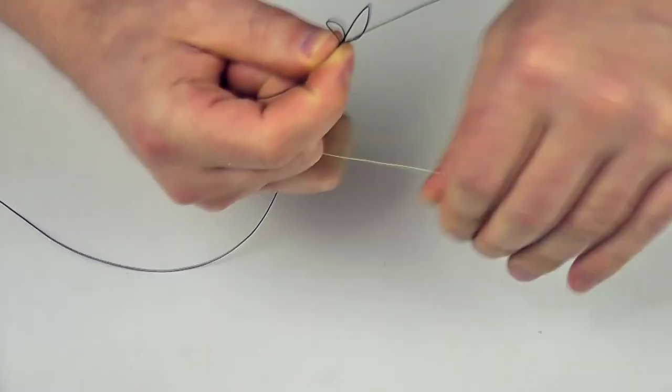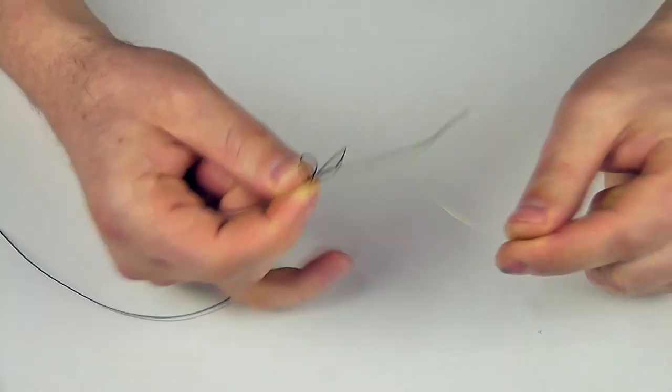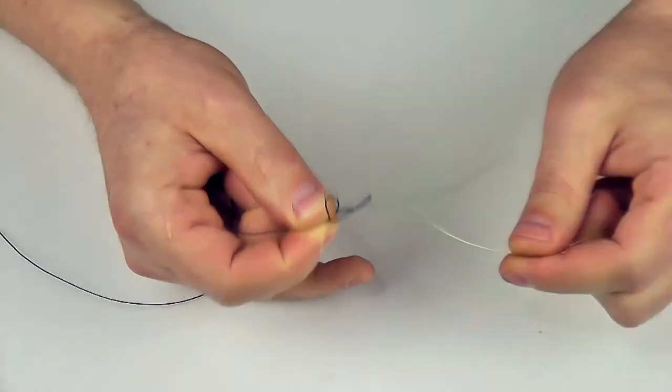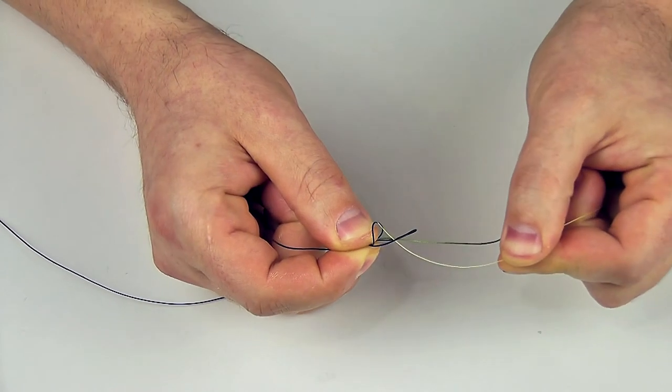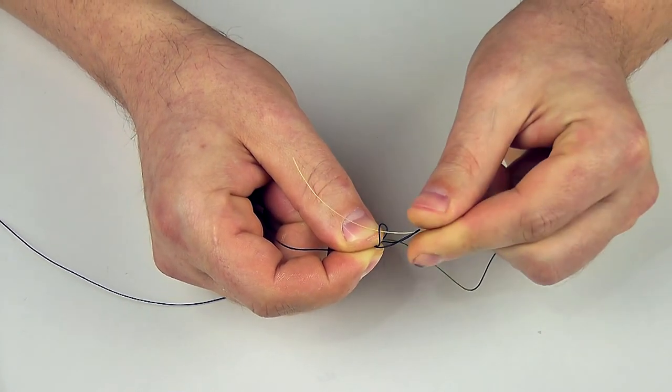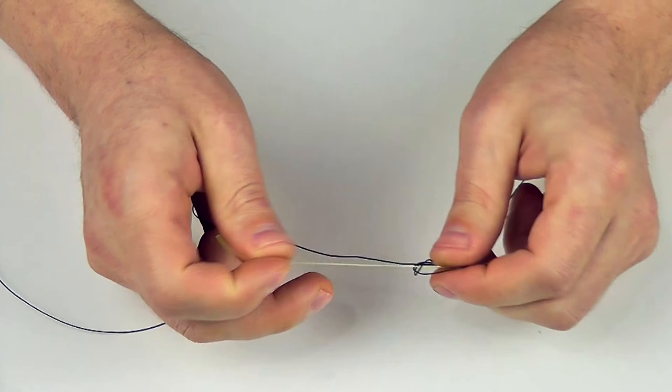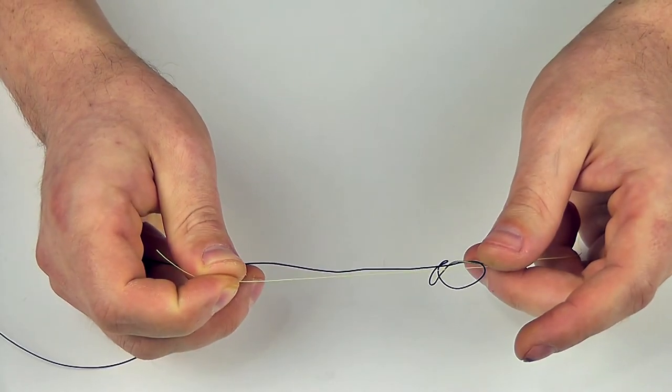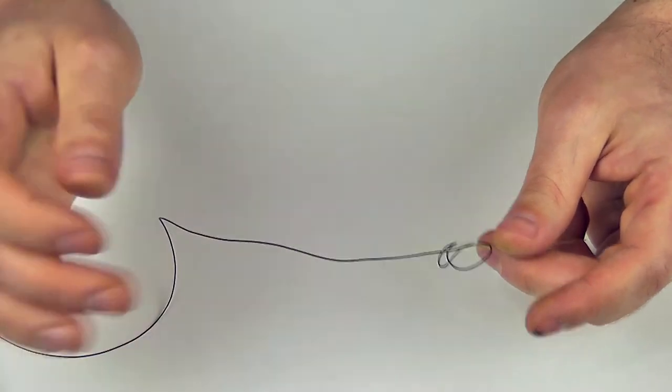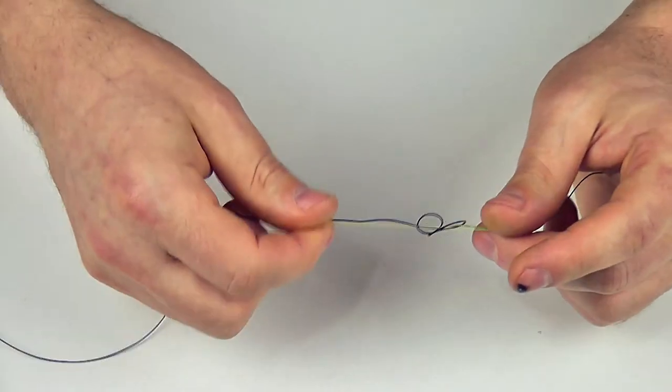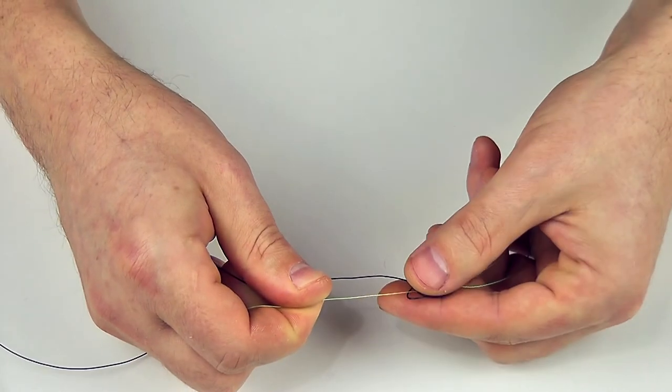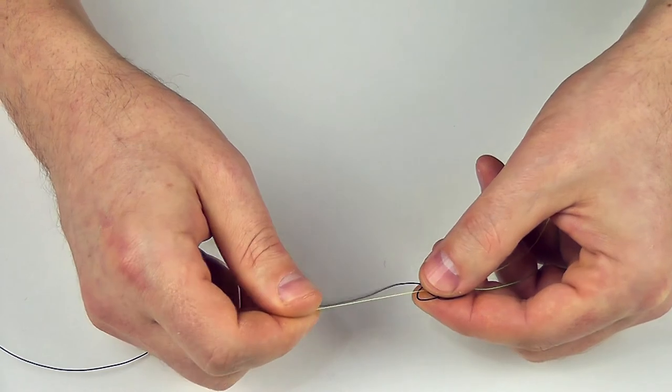So we pull the tag of the main fishing line into these loops. We have pulled our main line through the 8. And now we need to grip this knot with our fingers.